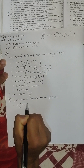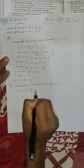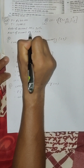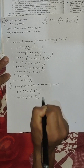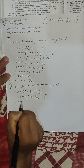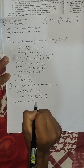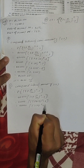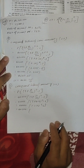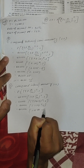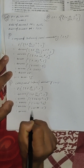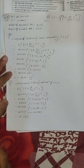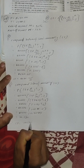The formula is P times (1 plus R over 100) to the power T, minus 1. The principle is 40,000, rate is 12, open 100, time equals 2, minus 1. This gives 0.2544, which equals 10,176. Therefore CI for account N equals 10,176 Rs.